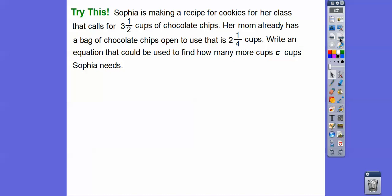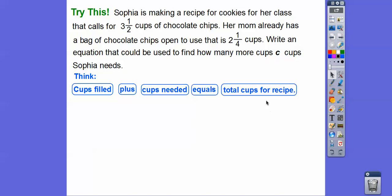All right, let's try this one here. Sophia is making a recipe for cookies in her class. I love cookies that calls for 3½ cups of chocolate chips. Her mom already has a bag of chocolate chips open that she's going to use that is 2¼ cups. Write an equation that could be used to find how many more cups, and we'll call it C, Sophia needs. So the cups filled, the cups filled, we're going to have 2¼ cups full already, plus the cups needed, that's going to be this C, how many more cups are going to be needed, will equal the total cups for the recipe.